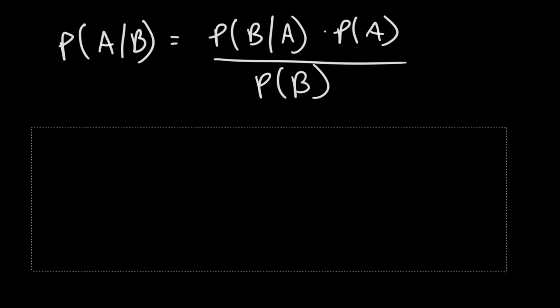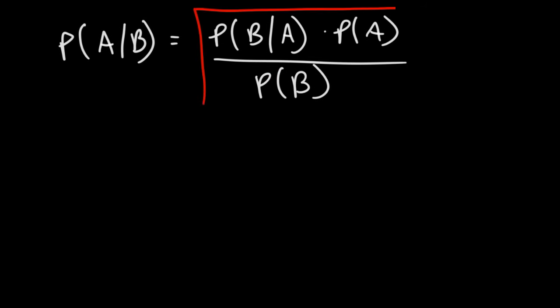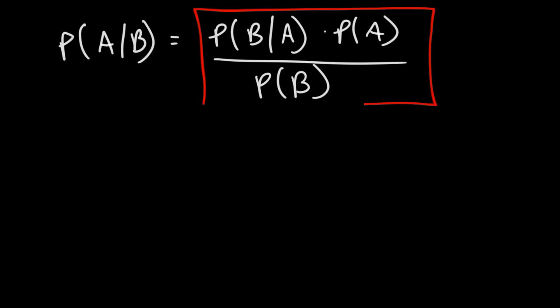So Bayes' Theorem helps us calculate the conditional probability of an event if you know the reverse conditional probability, along with some other probability values. This is the basic formula of Bayes' Theorem: P(A|B) is equal to P(B|A) times P(A) divided by P(B).